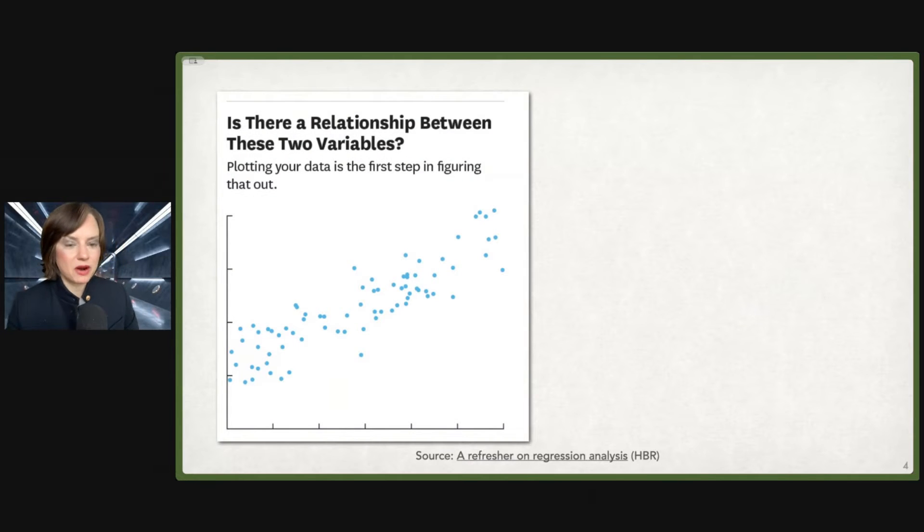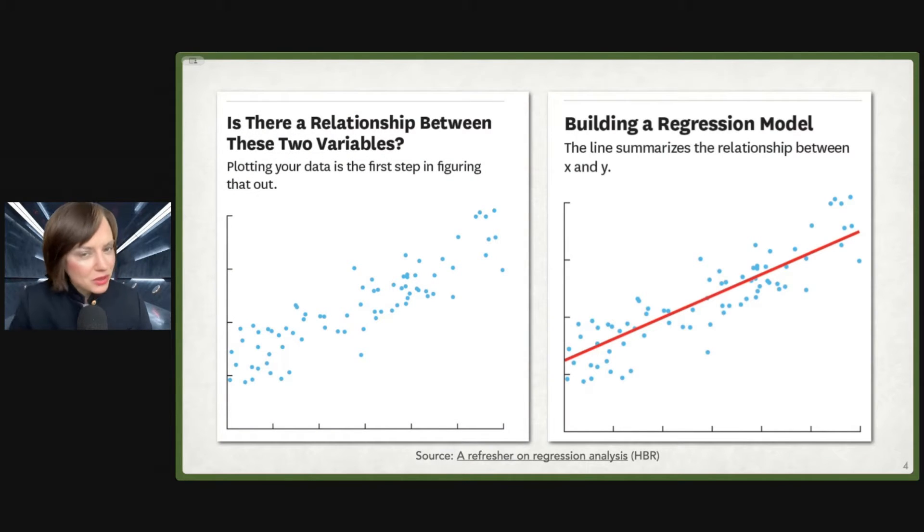This comes from the Harvard Business Review. Basically, what we're doing in linear regression, we're drawing a line. In linear regression, we plot our data and we draw this best fit line, this line that summarizes the relationship between X and Y in the simplest form of linear regression.